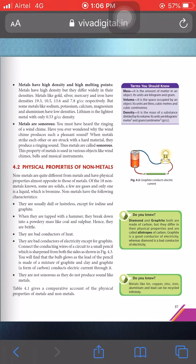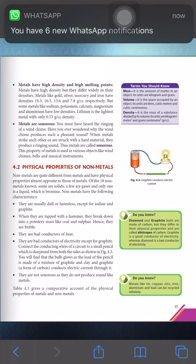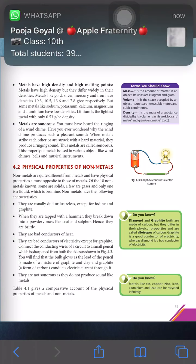Now we look at the physical properties of non-metals. Non-metals are quite different from metals — all the physical properties we read in metals are opposite in non-metals. From 118 elements on Earth's surface, there are 18 non-metals. Similar to metals, some non-metals are solid, some are gaseous, and some are liquid — for example, bromine is liquid in state.